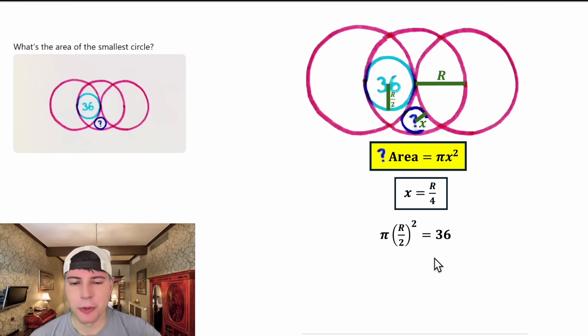Now we can write an equation to solve for big R. It's pi radius squared equals 36, where the radius is equal to big R over 2. Now we can solve for big R. This squared will distribute to both of these, giving us pi big R squared over 2 squared equals 36. 2 squared is equal to 4, so we have pi over 4 big R squared equals 36. We can multiply both sides by the reciprocal of pi over 4, which is 4 over pi. On the right-hand side, 36 times 4 is equal to 144, and that's still divided by pi.